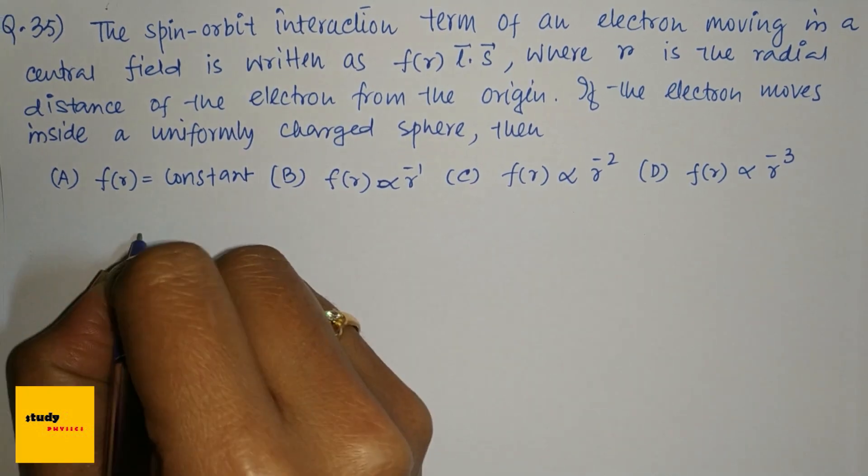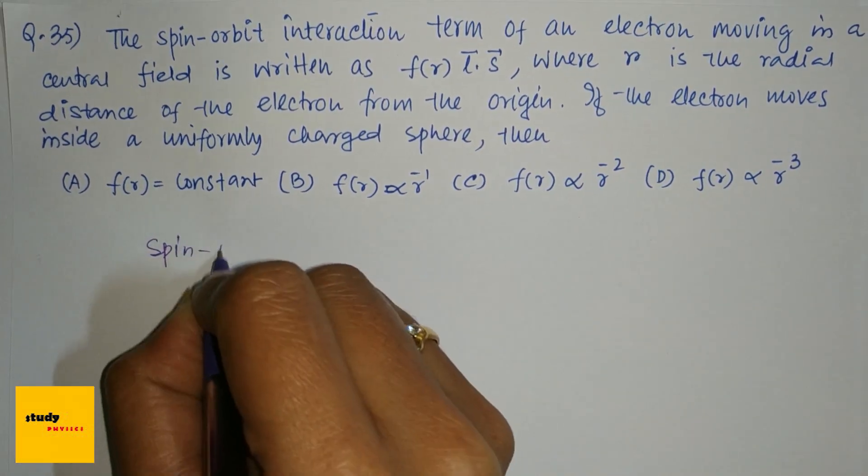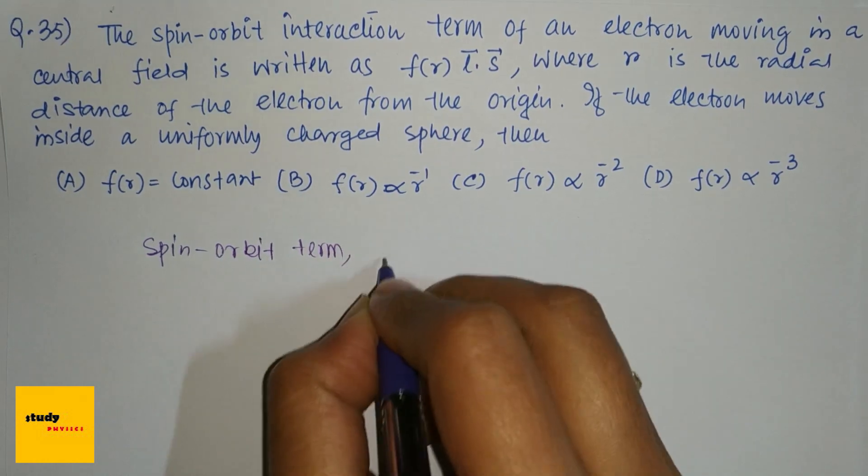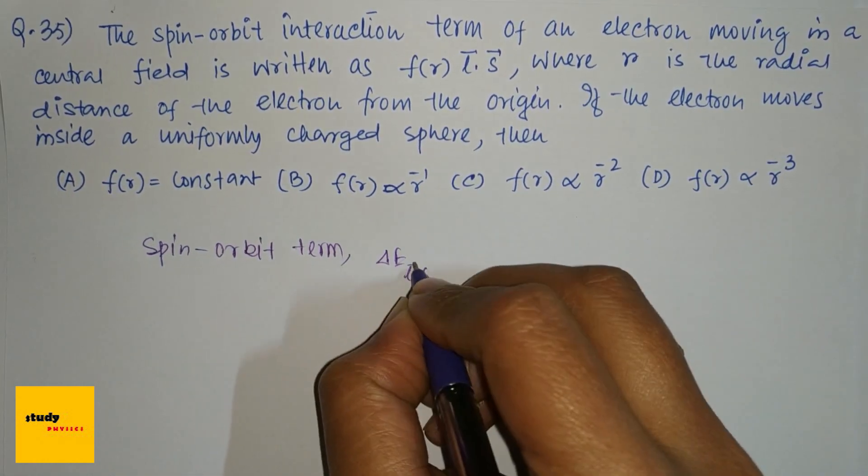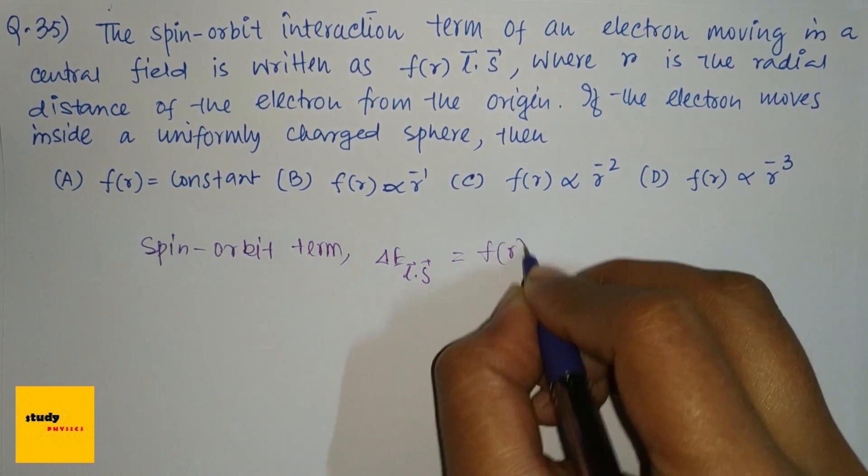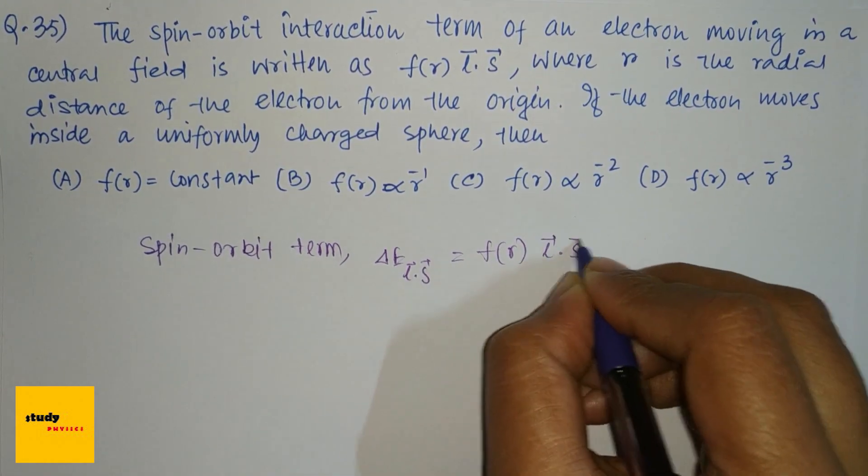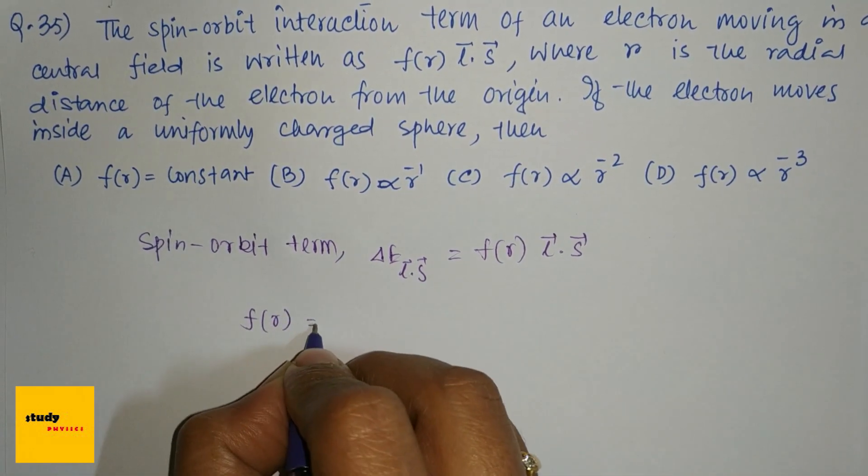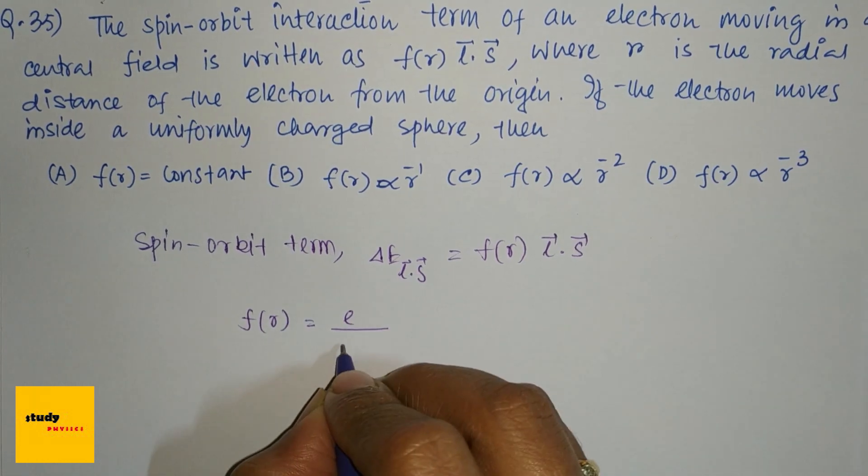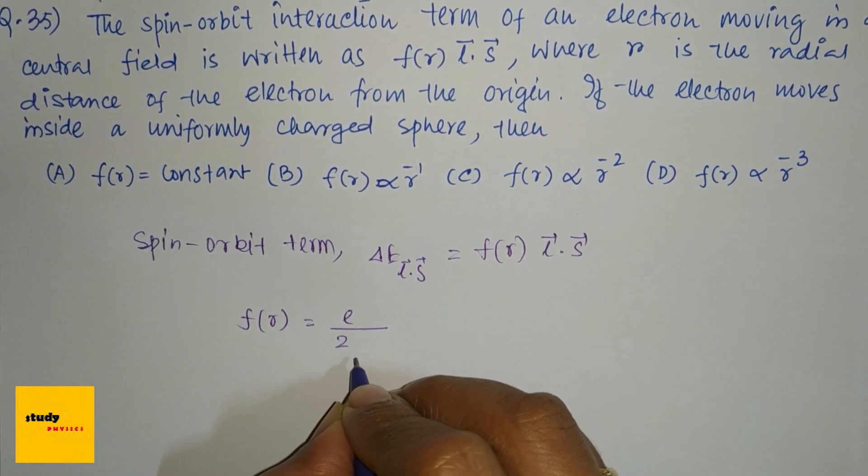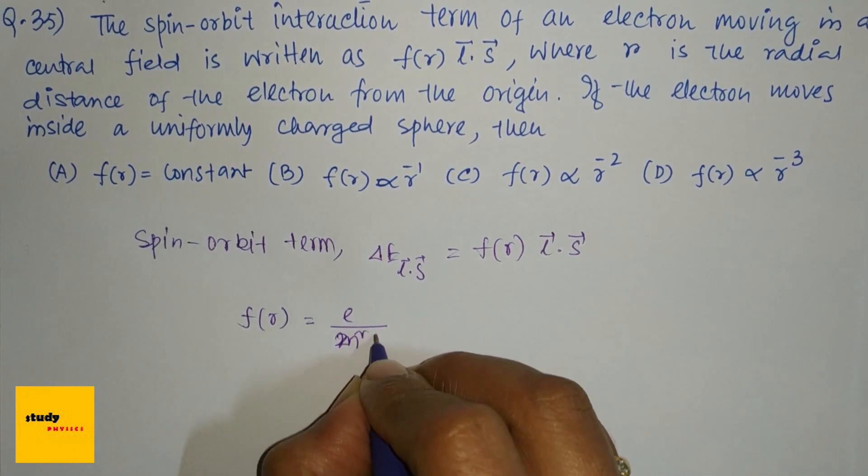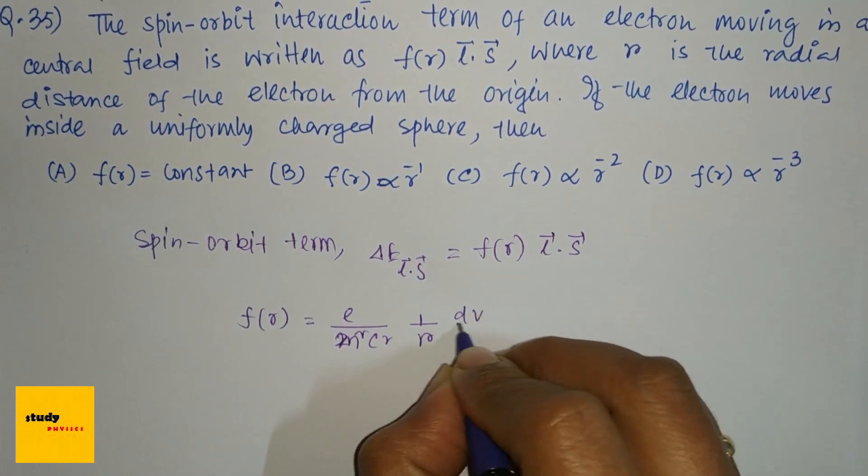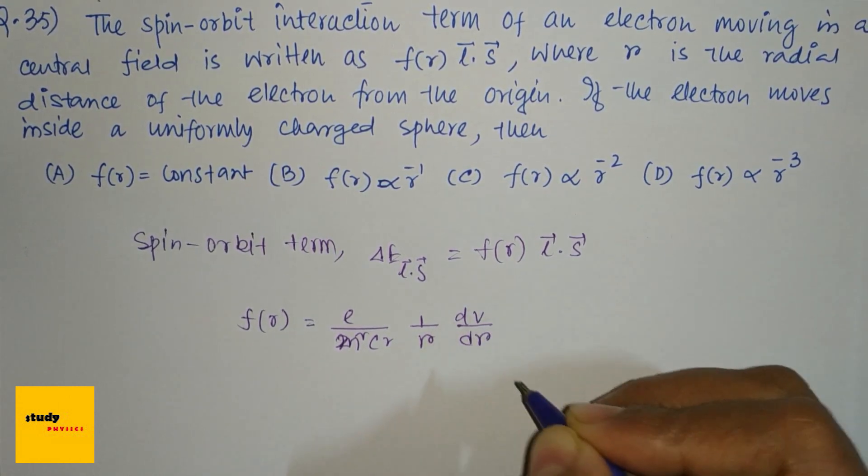So the spin-orbit term ΔE_LS = f(r)L·S, and f(r) = e/(m²c²) × (1/r) × (dV/dr), where V is the potential.